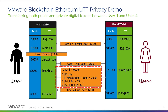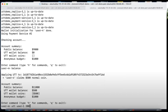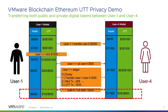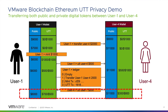Finally, User 4 also wants to use UTT technology to transfer two hundred dollars of private tokens from her account to User 1. You can see that post-transfer her private wallet has decreased from 500 to 300, whereas User 1's private wallet has increased from 500 to 700.